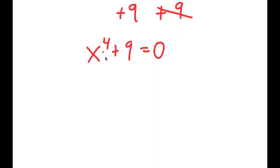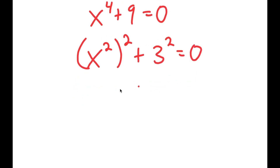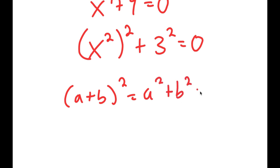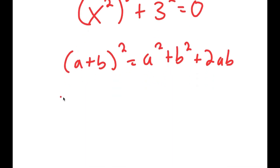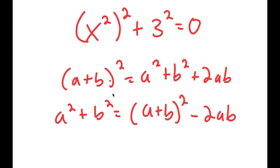From here, I can rewrite x to the power of 4 as x squared to the power of 2, and I can rewrite 9 as 3 squared. Now, if I have something in the form a plus b squared, this equals a squared plus b squared plus 2ab. So if I have a squared plus b squared, that must equal a plus b squared minus 2ab, because it's the same thing without the 2ab.